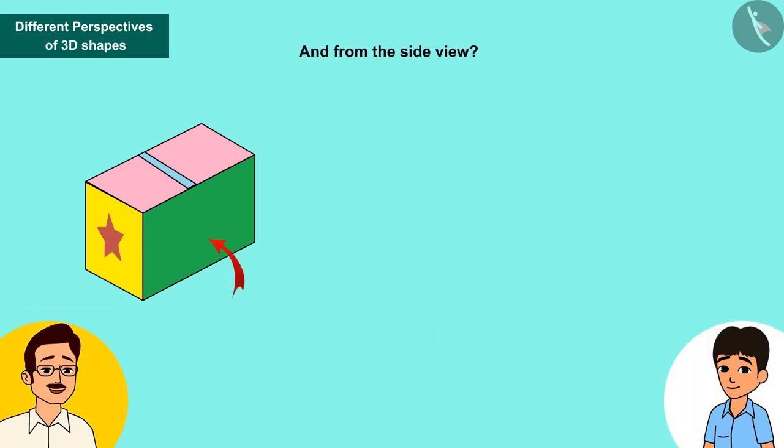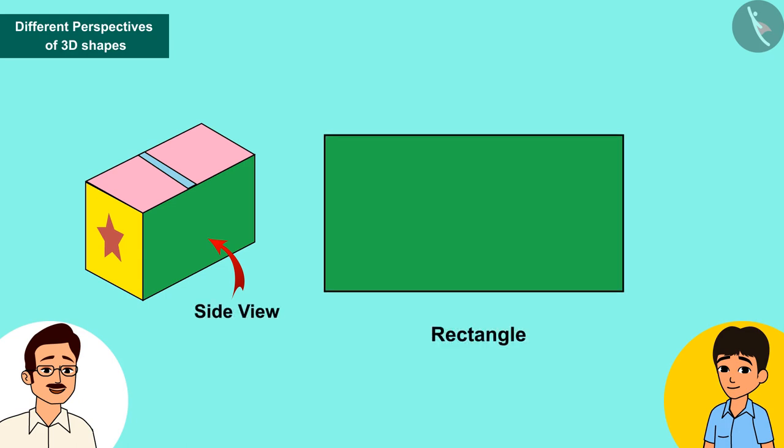And from the side view? Looking from the side, I again see a rectangle.